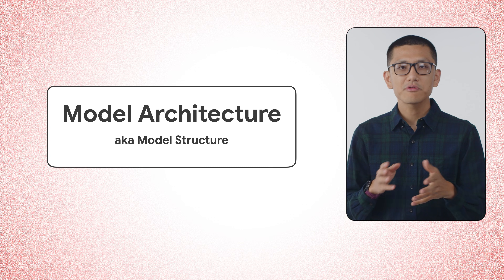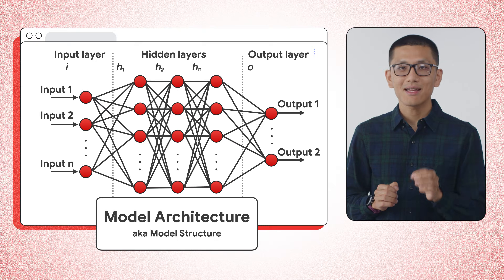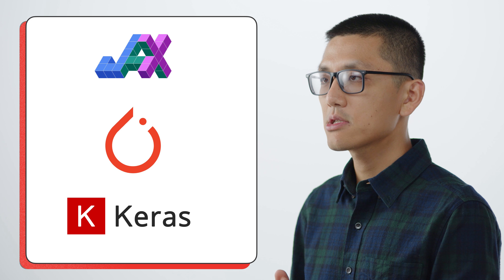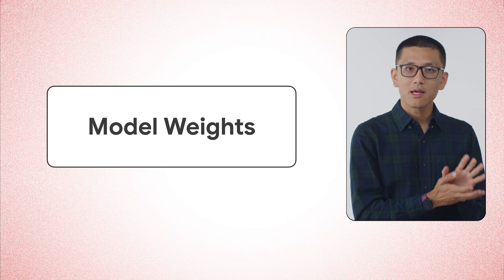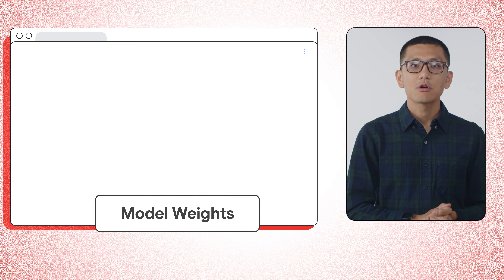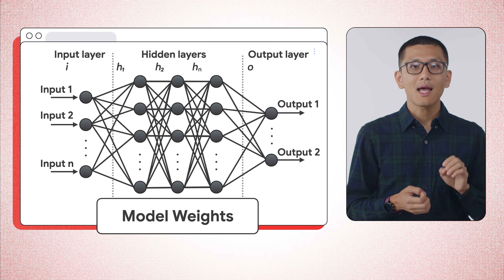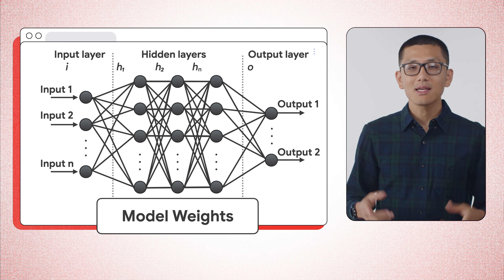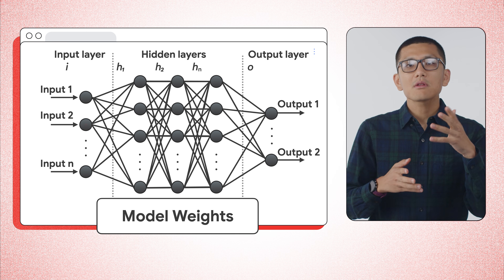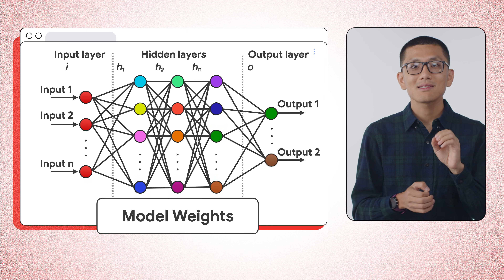Think of the model architecture as the blueprint or structure of the model. It defines how the layers are arranged and what operations happen inside them. We use code with frameworks like JAX, PyTorch, or Keras to describe this structure. Model weights, on the other hand, are the numerical parameters of the model that get tuned or changed during training. These numbers are what give a trained model its power. Sometimes you'll hear weights referred to as checkpoints. A checkpoint is a snapshot of a model's weights at a specific point in time, typically when the model has become really good at a certain task or set of tasks, and the developers want to save that state.